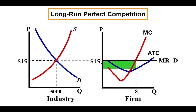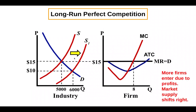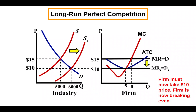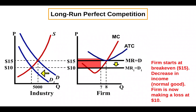In this example, the firm is currently making a profit because minimum ATC is below the price of fifteen dollars. Because this firm is making a profit, other firms are going to want to enter, and that shifts the market supply curve to the right, lowering the price. Now there is a new price of ten dollars — the break-even price — and so firms enter, it shifts the marginal revenue curve down, and now the firm is breaking even.